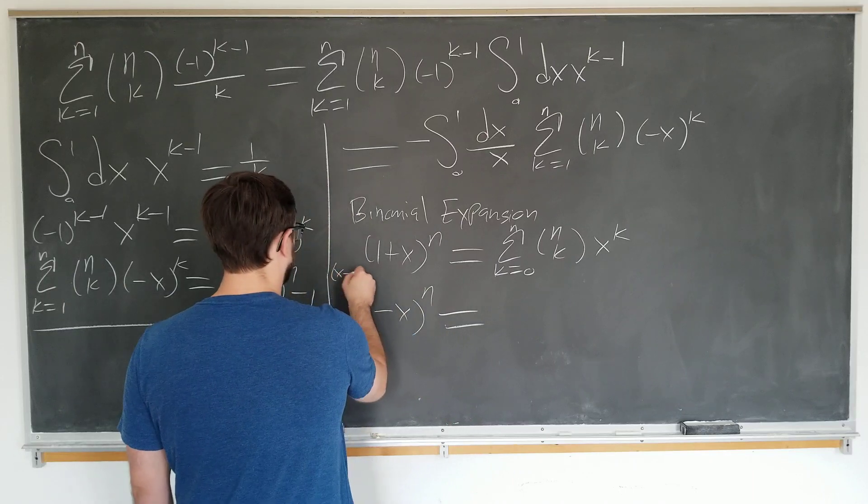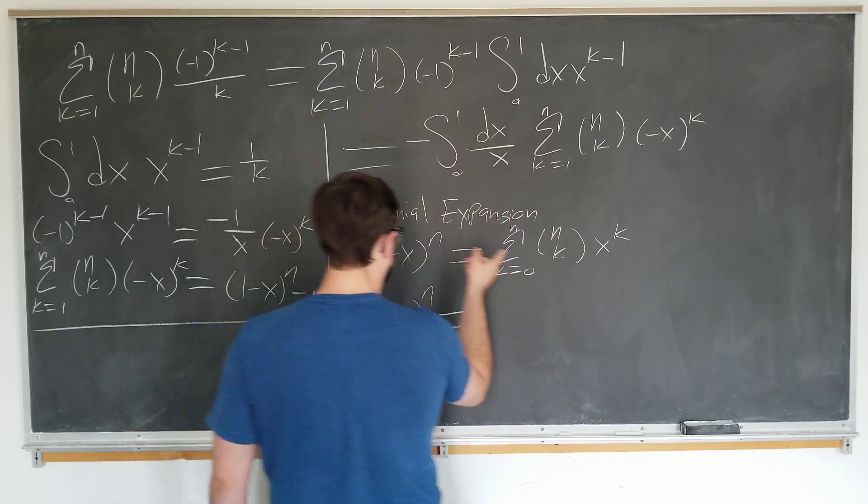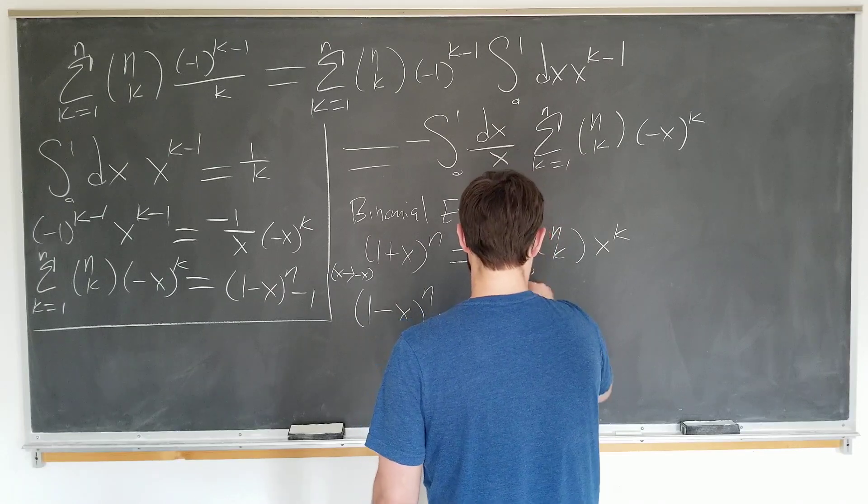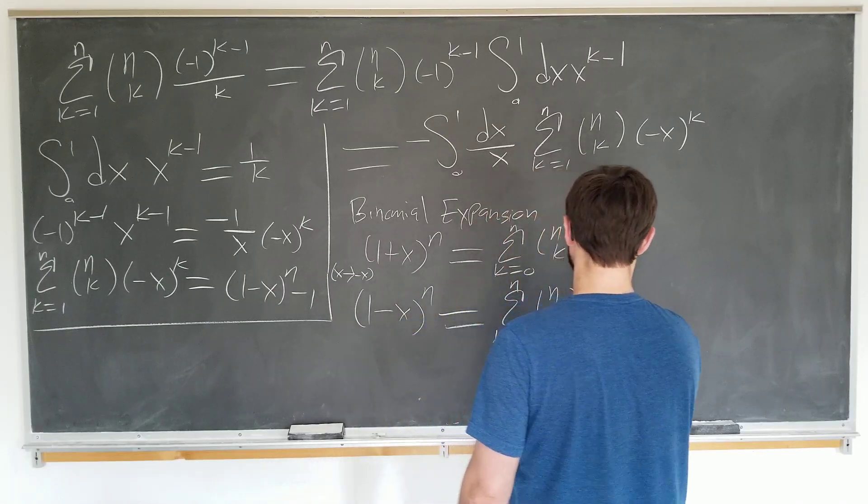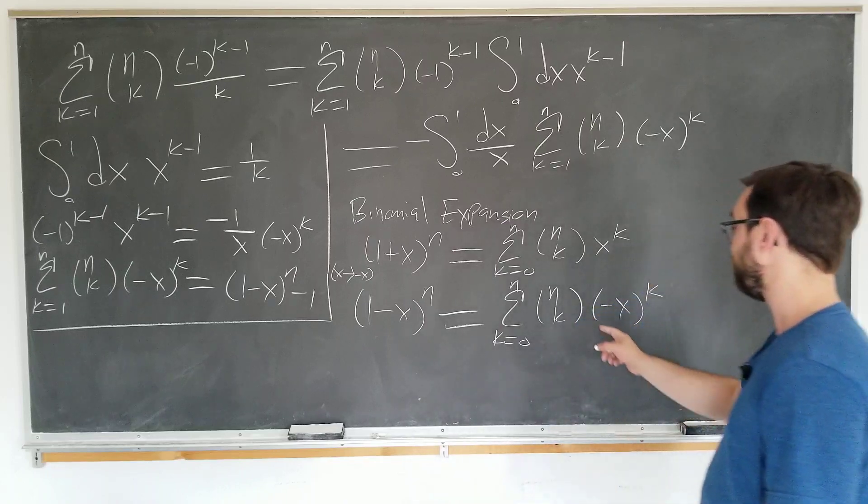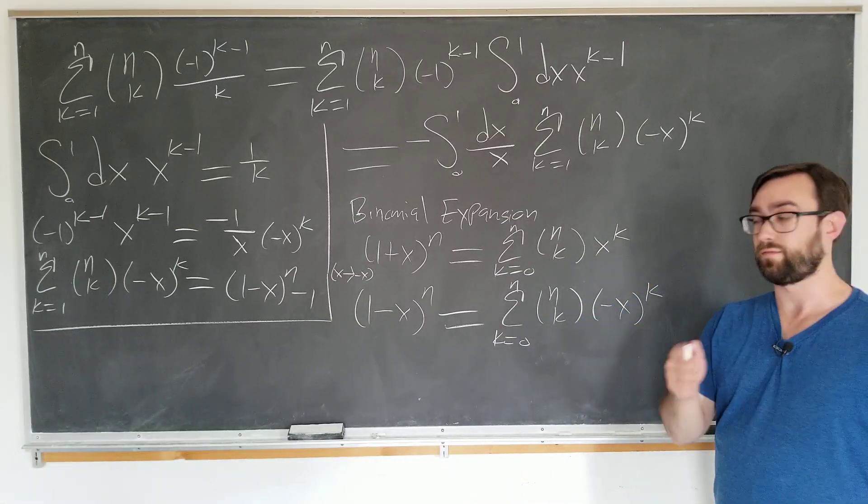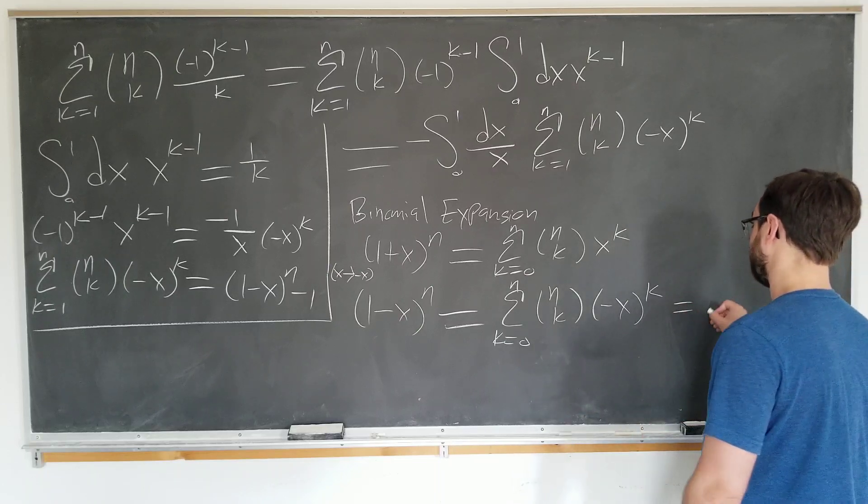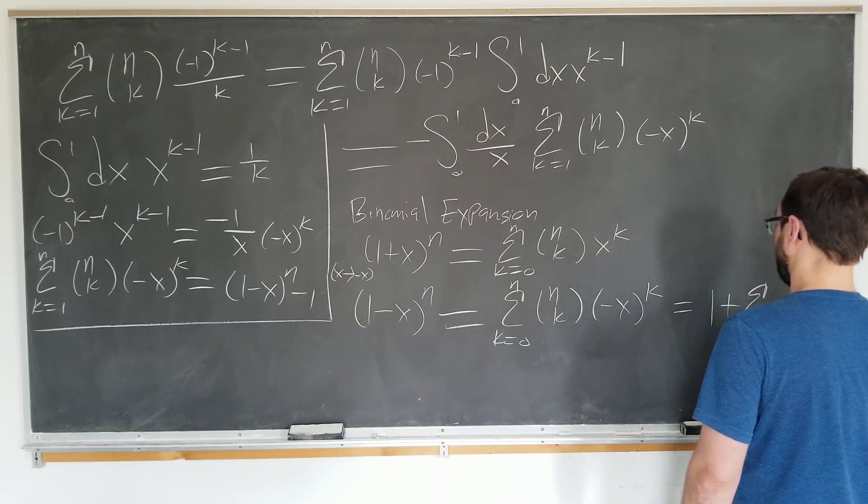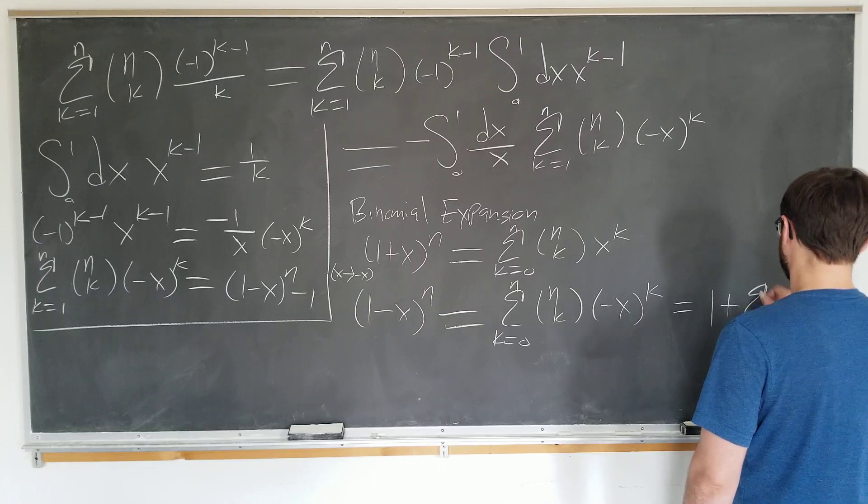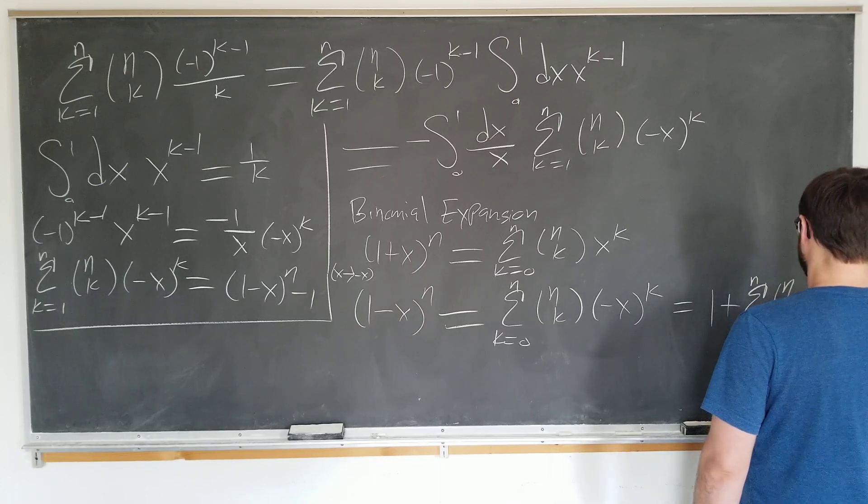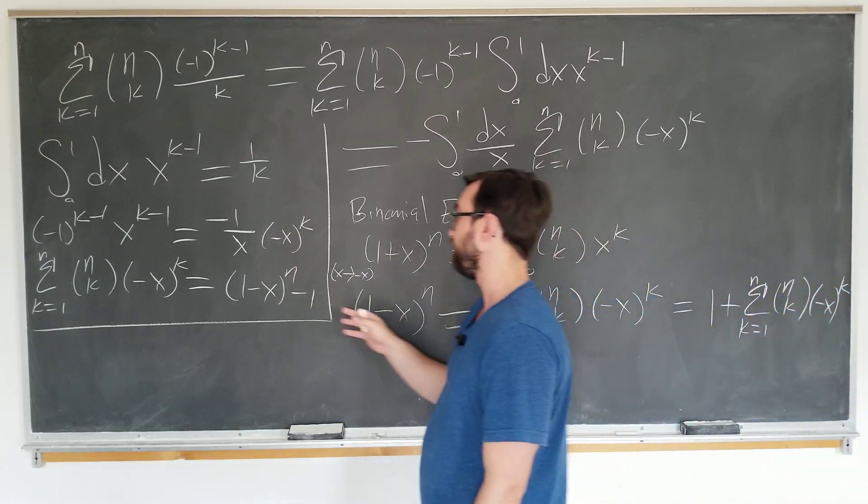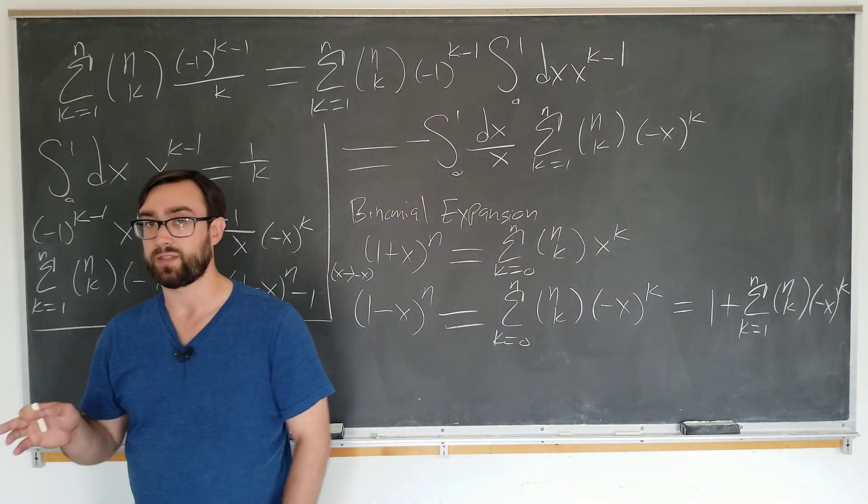So it's k equals zero to n, n choose k, minus x to the k and finally we're going to write out the first term here. So the k equals zero term is simply one and then we have what we want as k goes from one to n, n choose k minus x to the k and then you simply subtract one on both sides and you get the result that you seek here.